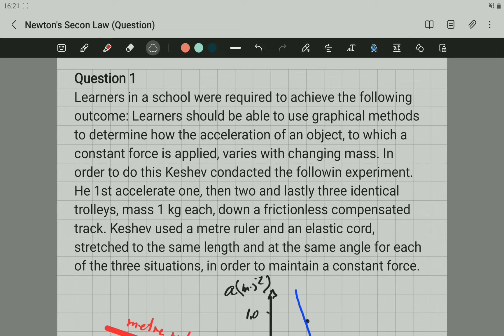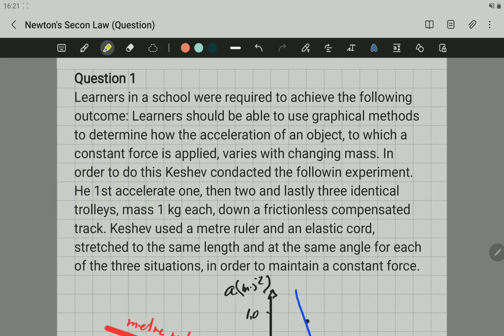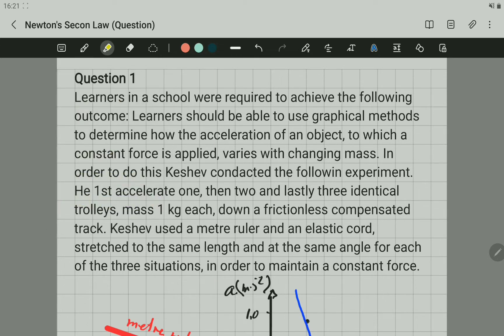This question states: learners in school were requested to achieve the following outcome. Learners should be able to use graphical method to determine how the acceleration of an object to which a constant force is applied varies with changing mass. In this experiment, you can see from this part that what is requested is the relationship between acceleration and mass when constant force is applied.